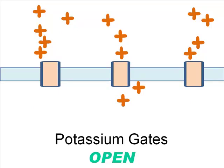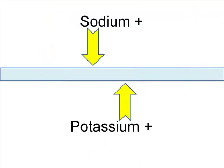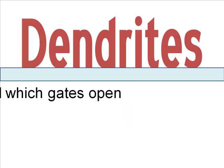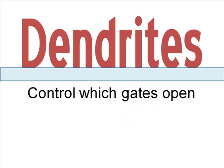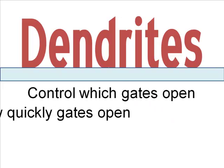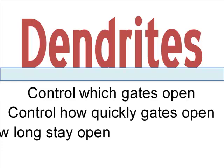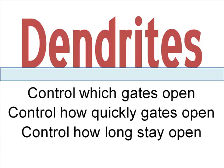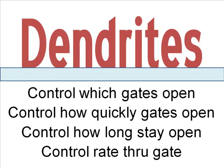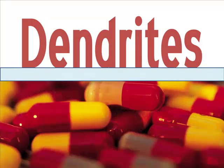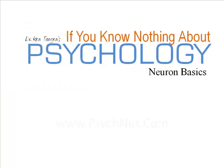Both sodium and potassium ions are positively charged, but they go in opposite directions when their gates are open. The dendrites regulate which gates open, how quickly they open, how quickly ions can go through the gates, and how long the gates stay open. This regulation can amplify the effects of stimulation or dampen it. Some drugs make dendrites more sensitive to stimulation or cause the ion gates to stay open too long.